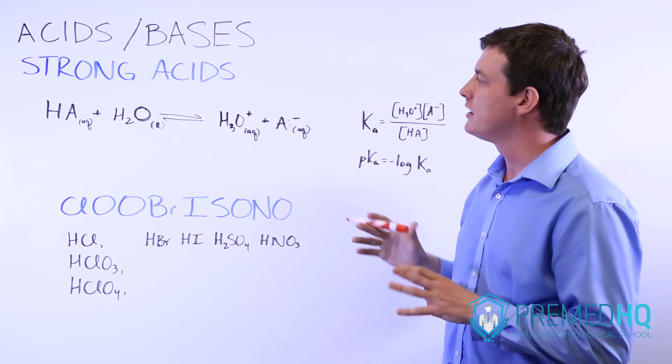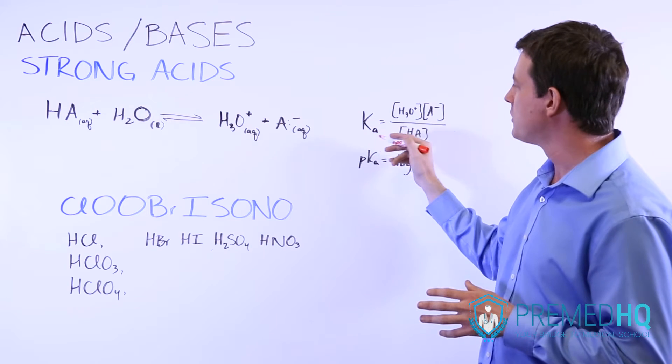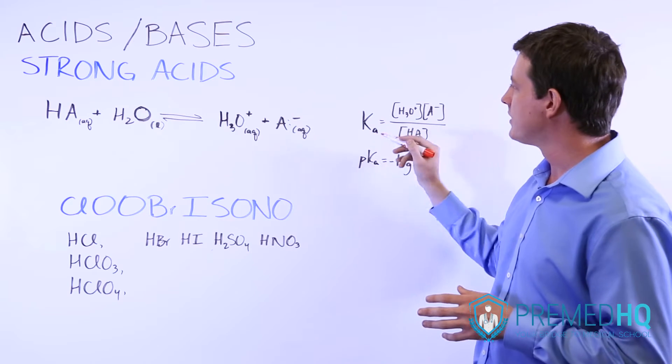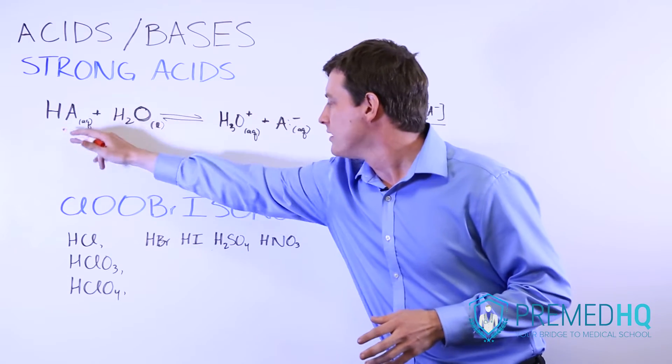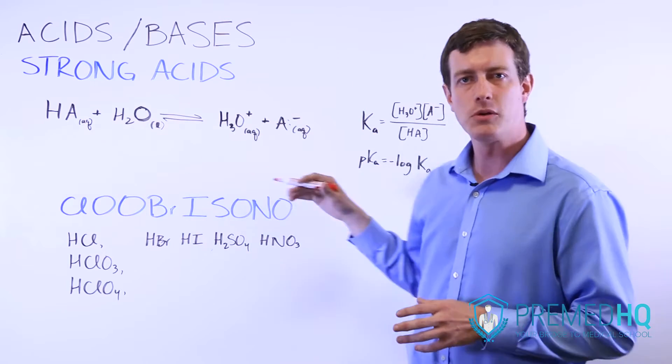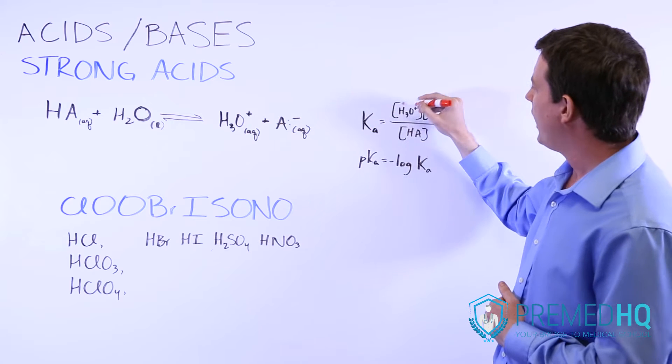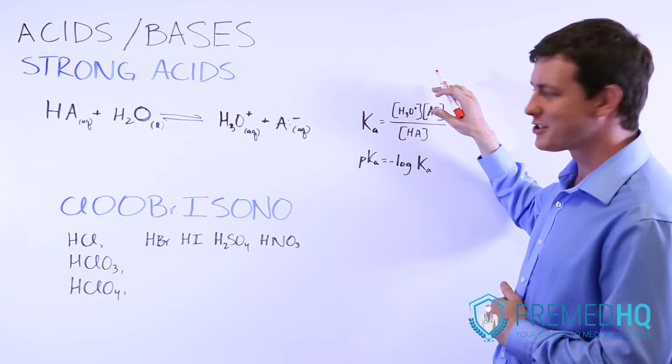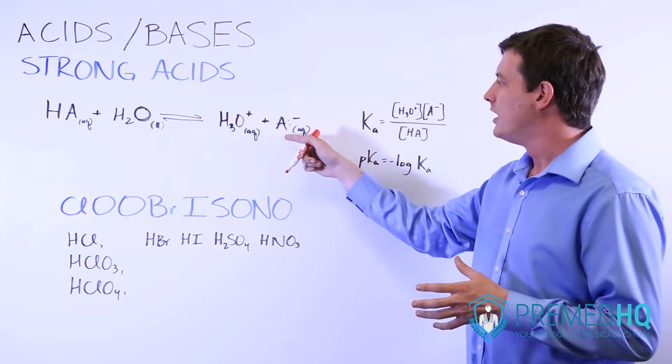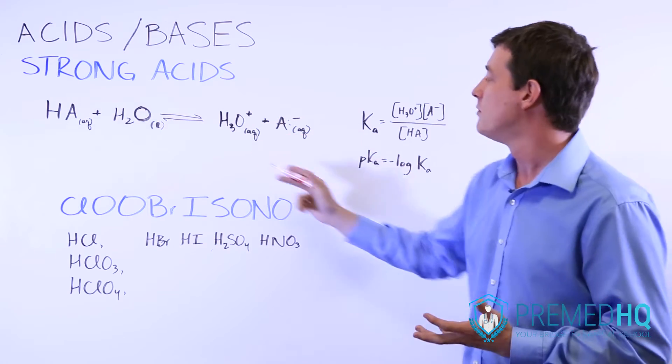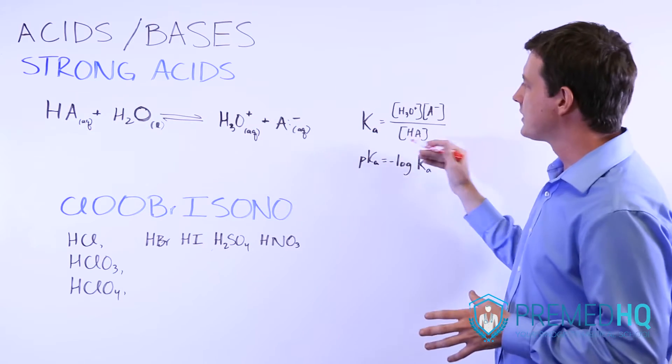When you draw something like this, you can now draw an equilibrium constant Ka, which is the acid dissociation constant. And what that does is it puts the two products up here in the numerator and the reactant that is aqueous and not a pure liquid in the denominator. So the Ka is represented as H3O+ times A-, the equilibrium concentration of the conjugate base, divided by how much of the original acid you had at equilibrium.